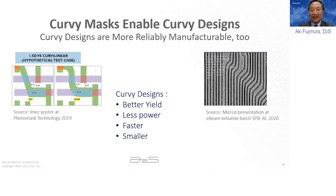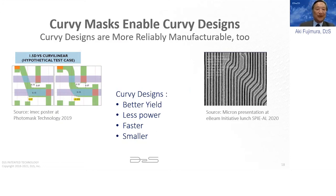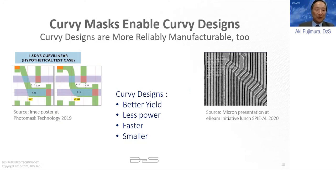Curvilinear designs will have better yield because they're more reliably manufacturable, and also because they will be smaller. Curvilinear designs will have less power and faster, more reliable clock speeds. These are pretty substantial benefits. We think the manufacturing world enabling the design world to do this is a very exciting prospect.